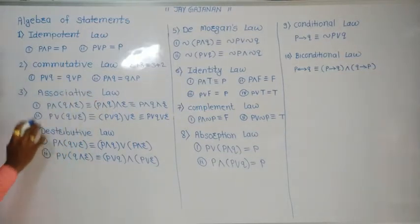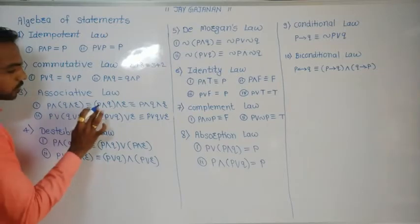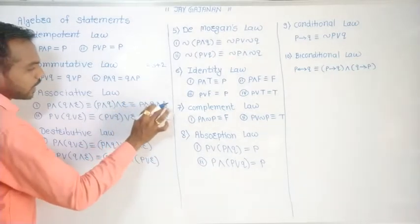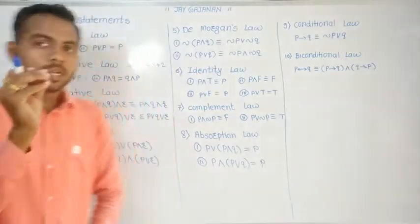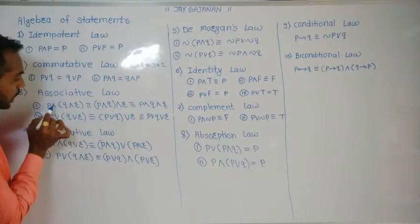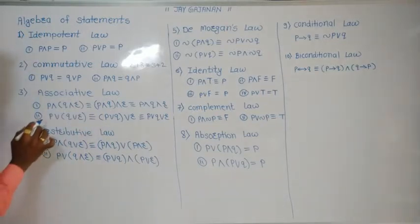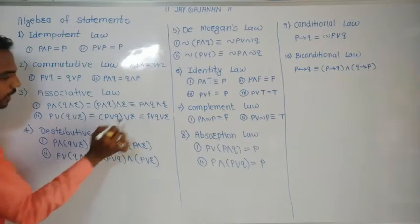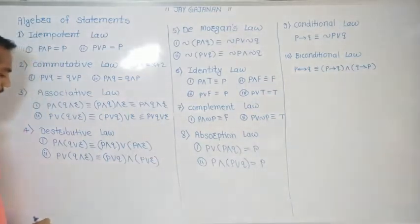Now the associative law: (P and Q) and R is equal to P and (Q and R), which equals P and Q and R. In this law we have the freedom to adjust the bracket. Similarly, P or (Q or R) equals (P or Q) or R, or simply P or Q or R.